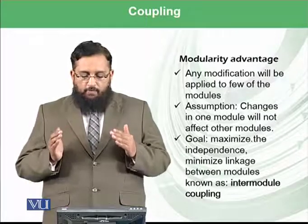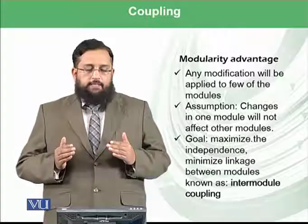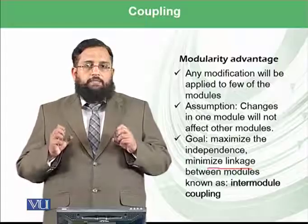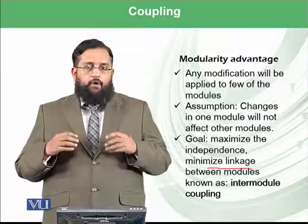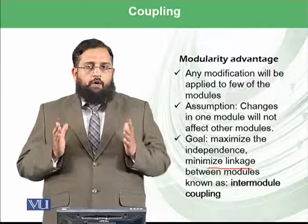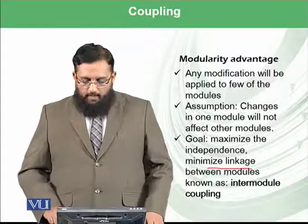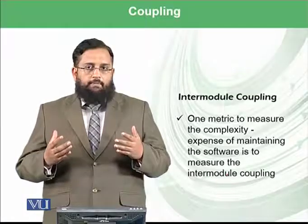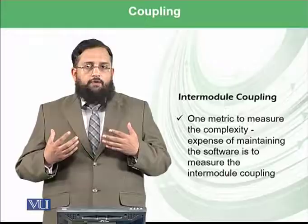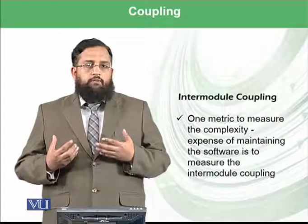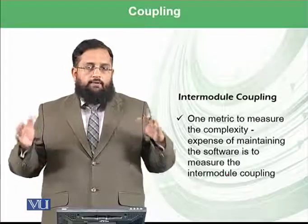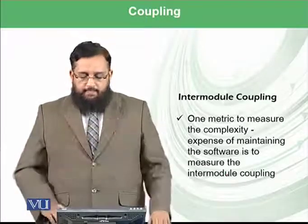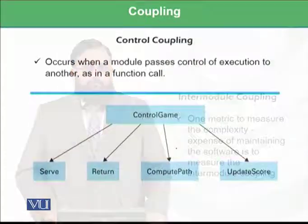We want to minimize the linkage between modules, known as intermodule coupling. Each module should be self-contained and not dependent on other modules. This is one of the key metrics. If a software has high intermodule coupling, it is complex and the cost of maintaining it will be very high. If modules have very low intermodule coupling and are not dependent on each other, the software is less expensive to maintain in the long run.